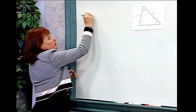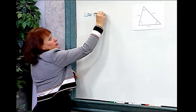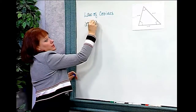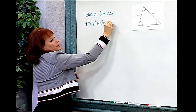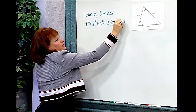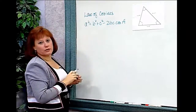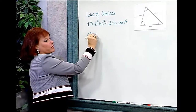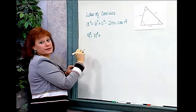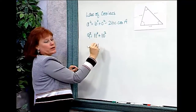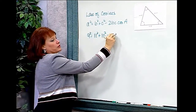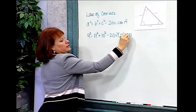As a reminder, the Law of Cosines can be used in triangles just like this. The Law of Cosines says A squared equals B squared plus C squared minus 2BC times the cosine of the included angle. In this case, the cosine of angle A. A is 9, so I have 9 squared equals B squared. B is 11, so I'll have 11 squared plus C squared. C is 10, so I'll have 10 squared minus 2 times 11 times 10.